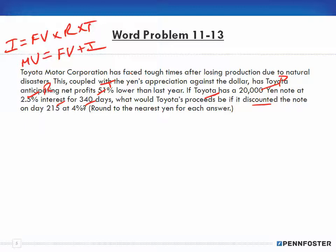First, we need to figure out what the maturity value is. So you have 20,000 times 0.025, because that's 2.5%, times 340 days over 360. Even though it doesn't tell you whether you're using ordinary or exact, for problems like these you're generally going to use ordinary.